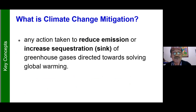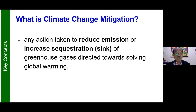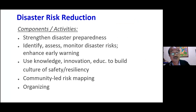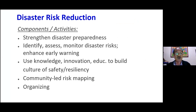Mitigation, on the other hand, is to reduce emissions and increase sequestration or the sink of greenhouse gases directed towards global warming. Disaster risk reduction refers to practices used to minimize risk and disaster — usually done by governments and some NGOs, who do mapping, identify disaster areas, monitor disaster risk, and other things.